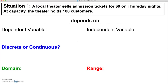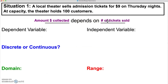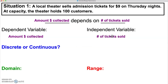In this first situation, a local theater sells admission tickets for $9 on Thursday nights. At capacity, the theater holds 100 customers. From this situation, we can write this depends statement: the amount of money collected depends on the number of tickets sold. So the dependent variable is our amount of money collected, and our independent variable is the number of tickets sold.